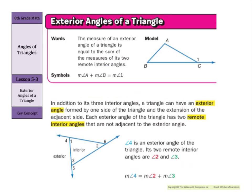Now that we know how to solve for interior angles, let's move to the exterior — the outside of the triangle. The measure of an exterior angle of a triangle is equal to the sum of the measures of the two remote interior angles. A triangle can have an exterior angle formed by one side of the triangle and the extension of the adjacent side. Each exterior angle has two remote interior angles that are not adjacent to it.